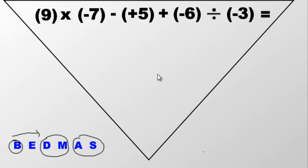However, look inside the brackets. Is there anything to solve? Look inside this pair — there's a nine, but it's not asking us to do anything with the nine. The next set says negative seven — nothing to do with it either. Nothing in these brackets indicates we need to do anything with the numbers, so we are done with the brackets. Exponents are not in this equation, so we keep rolling along.